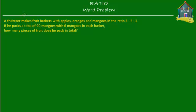Welcome to homecampus.com.sg. Let's solve this word problem. A fruiterer makes fruit baskets with apples, oranges, and mangoes in the ratio 3 to 5 to 2.